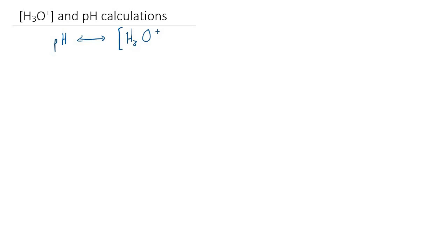So the symbol for concentration are these square brackets. Anytime you see something in square brackets, at least in the context of chemistry, this is going to mean concentration.